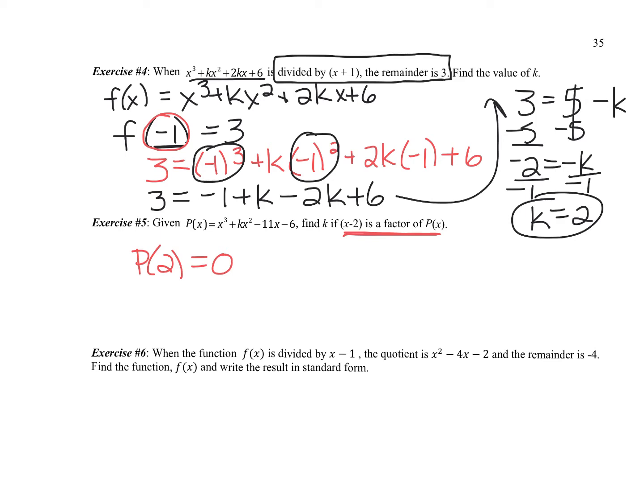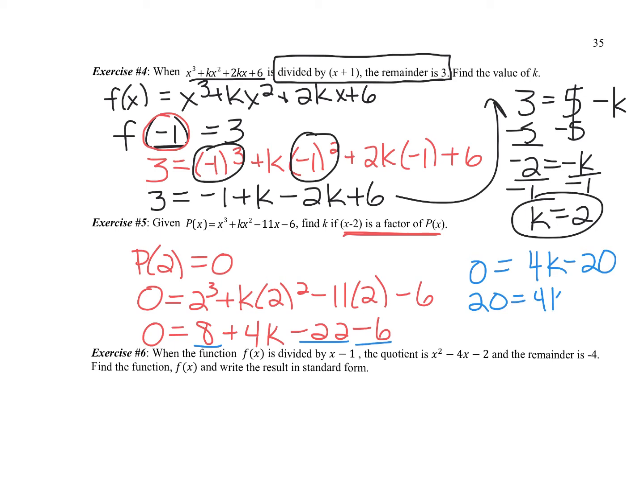So we can plug this in. We're going to plug the 2 in for the x's, right, because it's p of 2. And then set the function equal to 0. Once again, once I simplify, I'm going to get a linear function. There's going to be no squares left. So I have 8 plus 4k minus 22 minus 6. Combining these numbers together, I'm going to get 0 equals 4k minus 20. So when I add 20 over, I get 20 equals 4k. Divide by 4, and I get k equals 5.